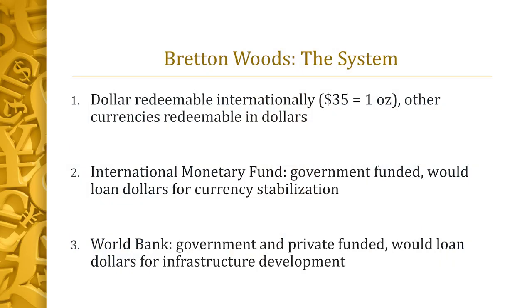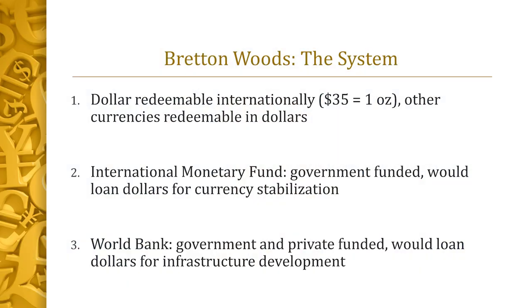The dollar was redeemable in gold, at least for some people. Bretton Woods also created the IMF, the International Monetary Fund — government-funded — which would loan dollars to various countries for currency stabilization if they were at risk of suffering a devaluation. They could get an infusion from the IMF, which still exists to this day. The World Bank was also created, partly funded by the government and partly by private funds such as Wall Street, to loan dollars abroad for infrastructure development — a loan to Chile to build a road, or loans to Europe for infrastructure. These two institutions helped spread dollars around the world, often under the guise of foreign aid.